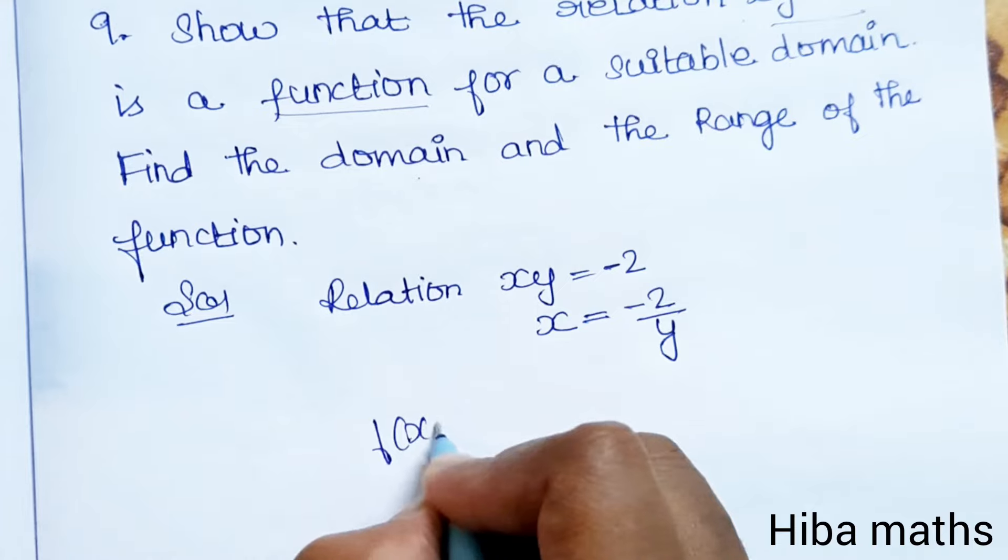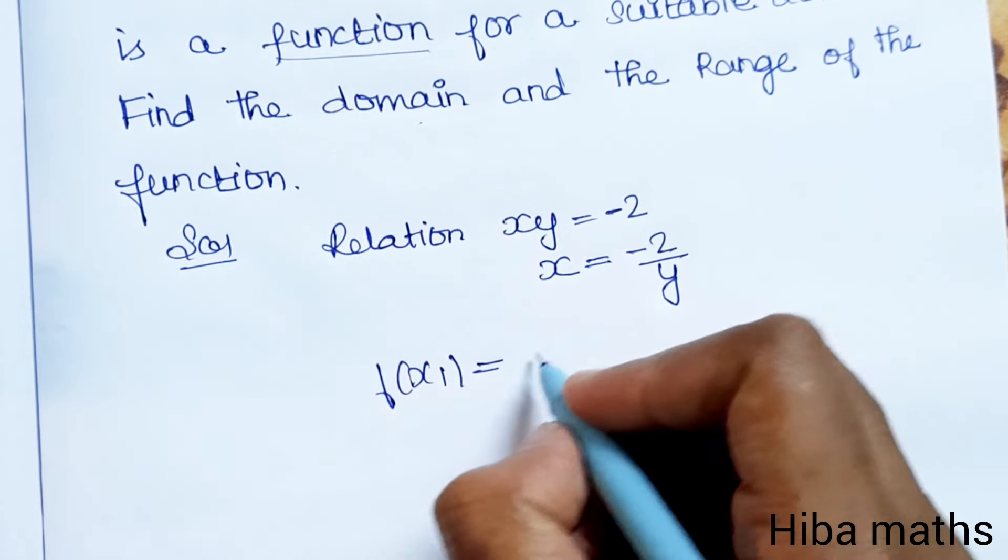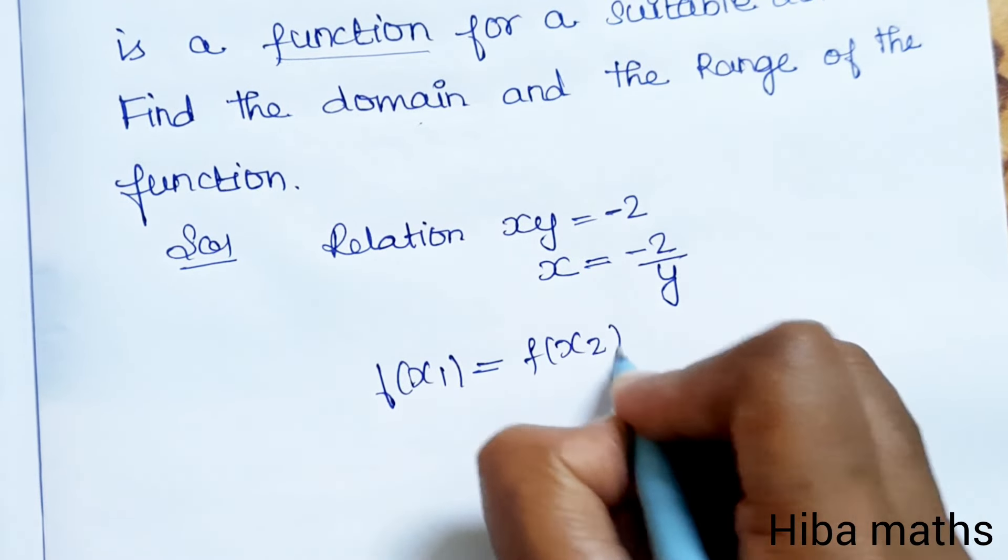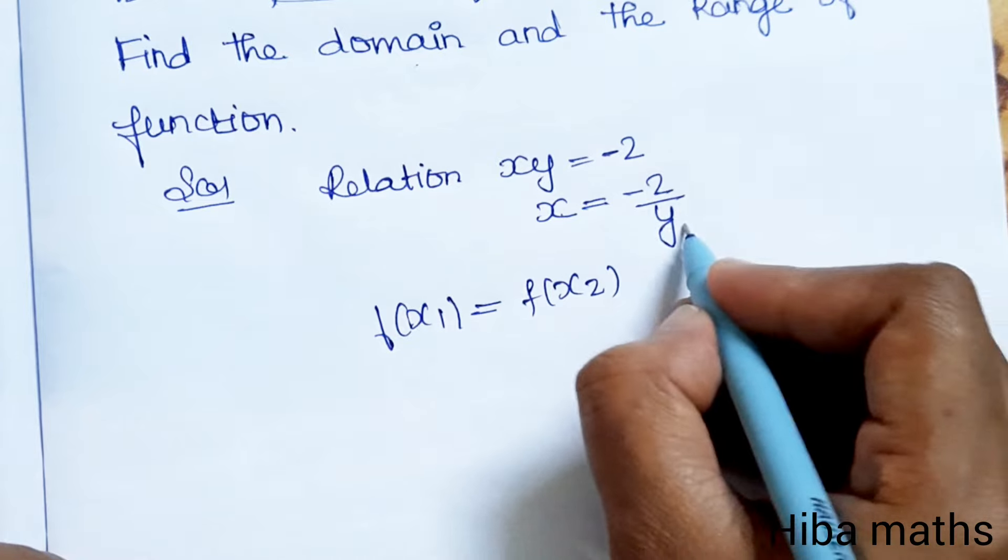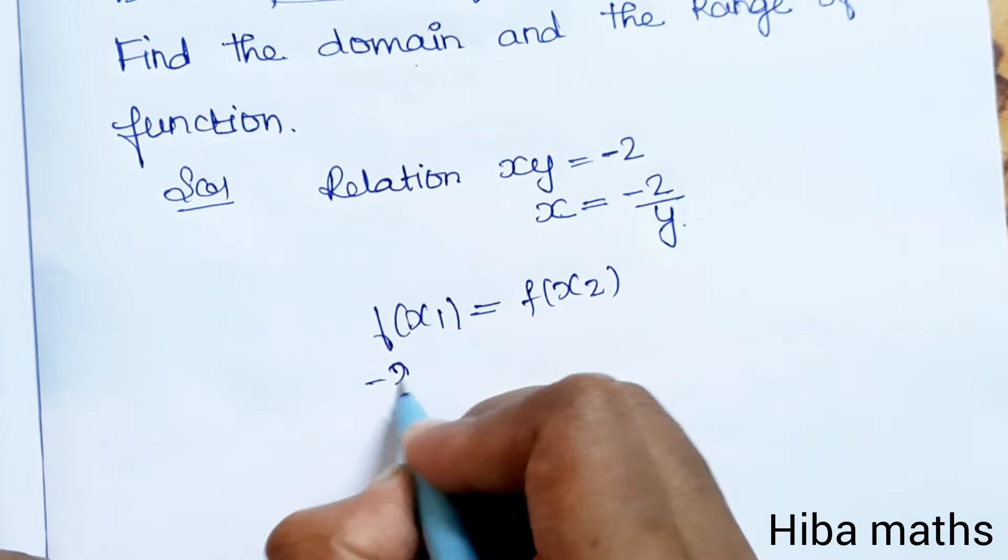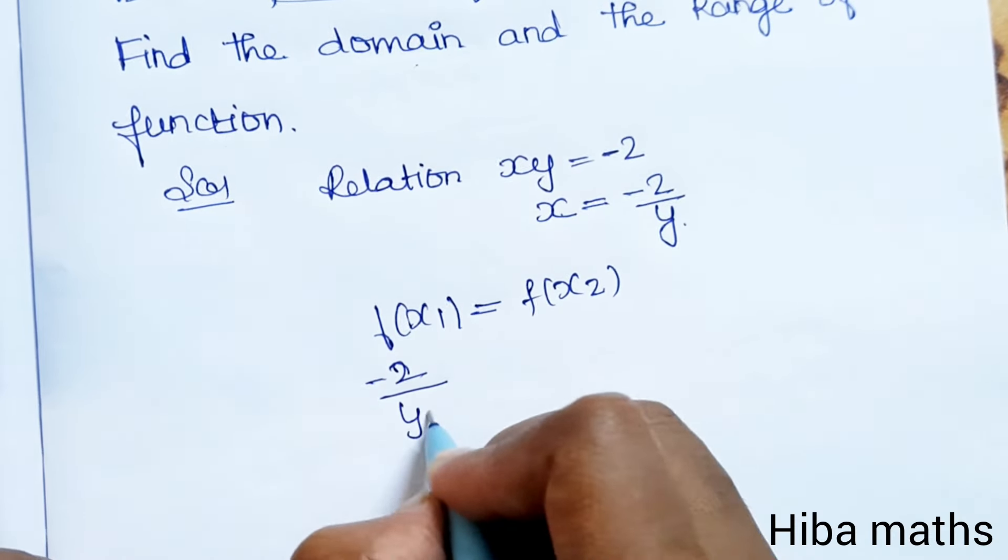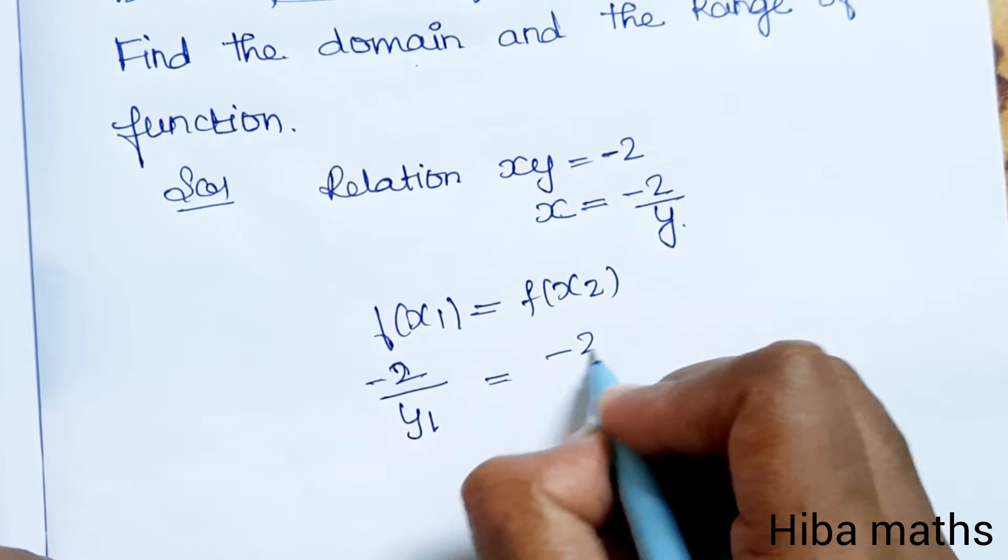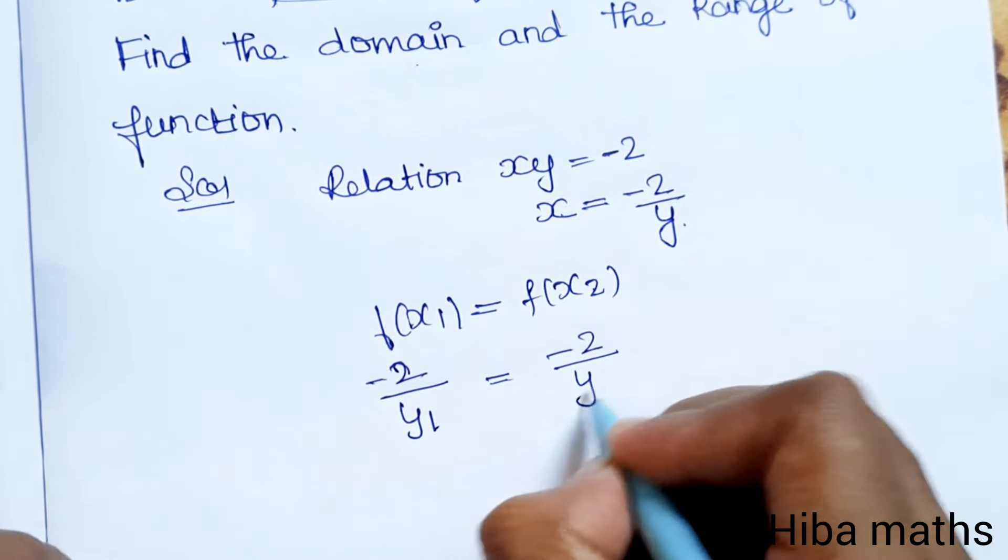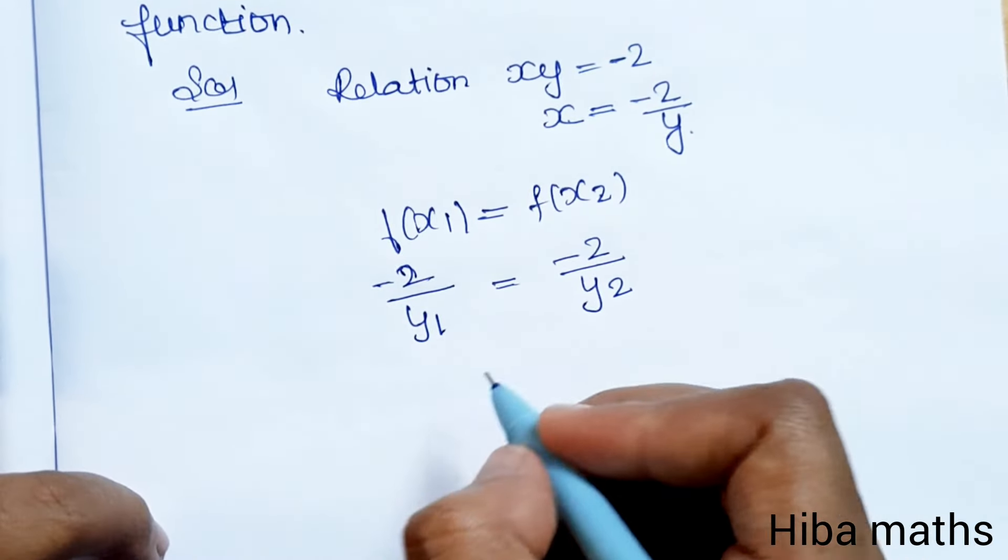If x1 gives y1, and x2 gives y2, then minus 2 over y1 equals minus 2 over y2. Cancel the minus 2 terms. We get 1 over y1 equals 1 over y2. Cross multiply to get y1 equals y2.